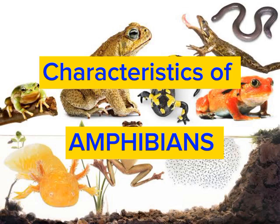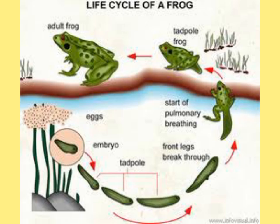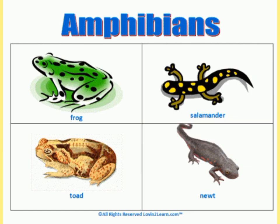Characteristics of amphibians. The name amphibian means double life and refers to the fact that the organism spends part of its life in water and part on the land. Examples of amphibians are frogs, toads, newts, salamanders, etc.